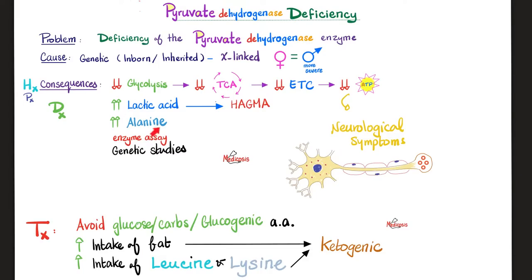How can I diagnose this patient? History, physical exam, genetic studies, and measuring the enzyme — you'll find decreased enzyme levels. How can we help the patient? Avoid glucose and anything that gives you glucose, including carbohydrates and glucogenic amino acids, which are most of them. The only amino acids you're allowed to take are leucine and lysine, which are purely ketogenic. And of course, you can intake fat, because fats are ketogenic, not glucogenic.